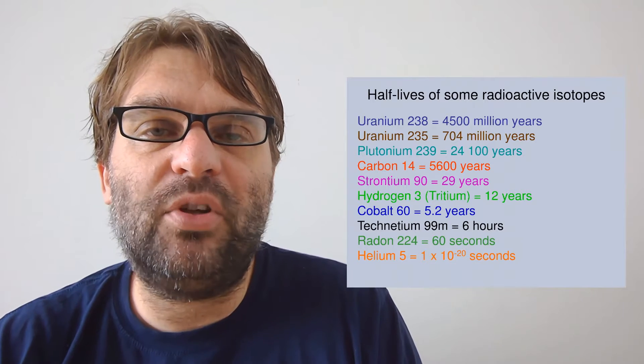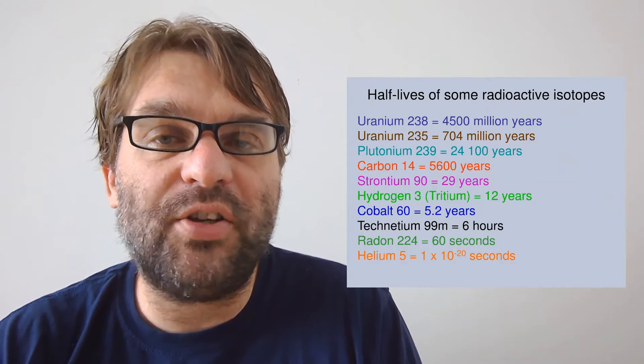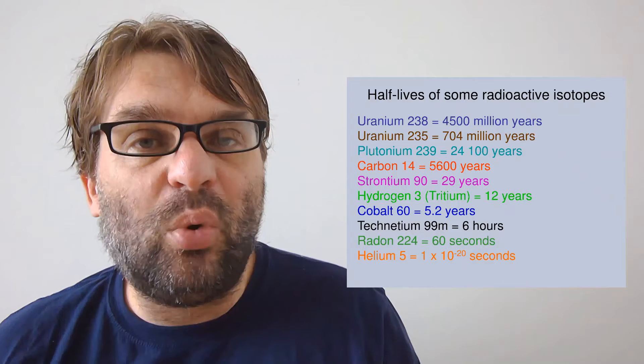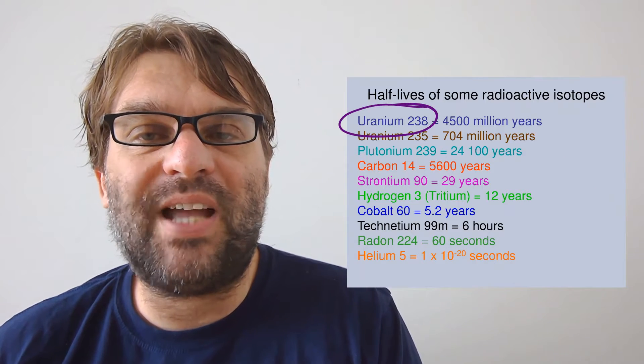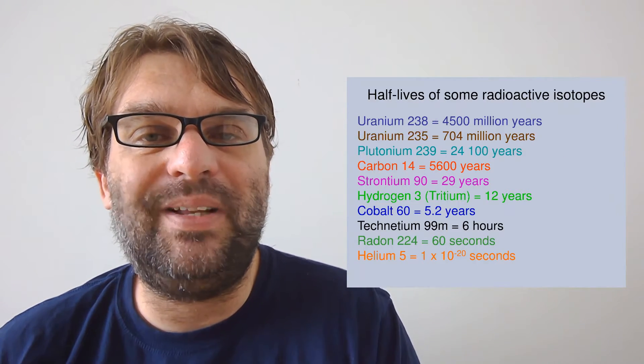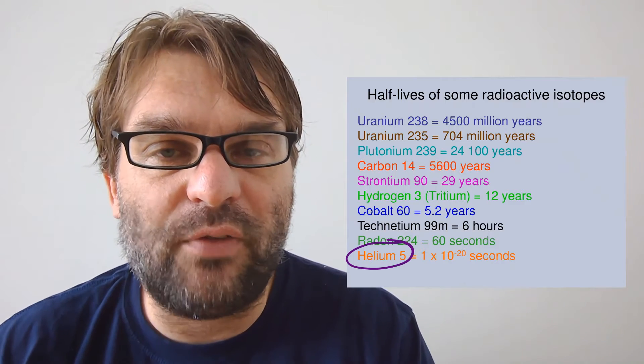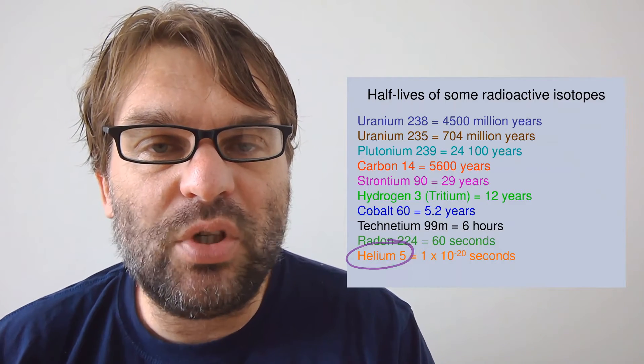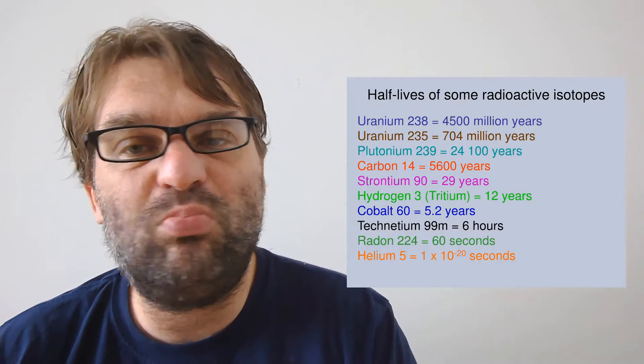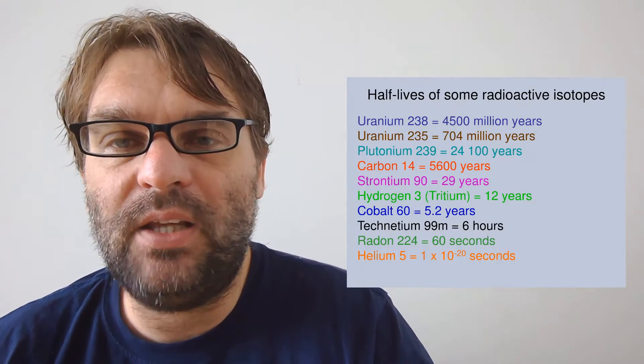Here are some examples of half-lives of isotopes. They can range from the very long, like uranium-238 with a half-life of 4,500 million years, to the very small, like helium-5, which is 1 times 10 to the negative 29 seconds - basically instantaneous decay.